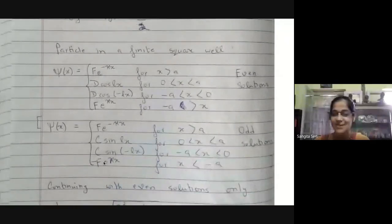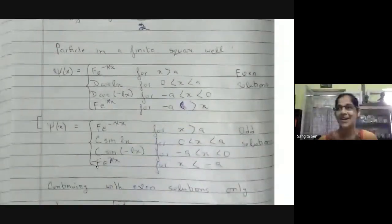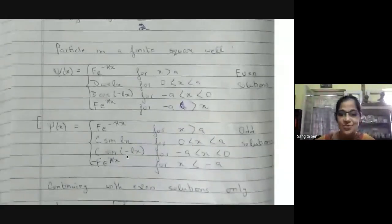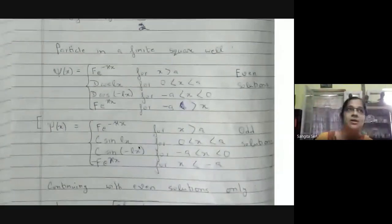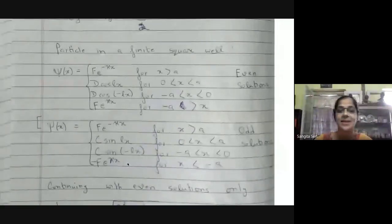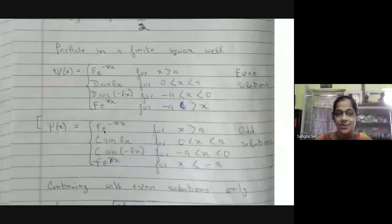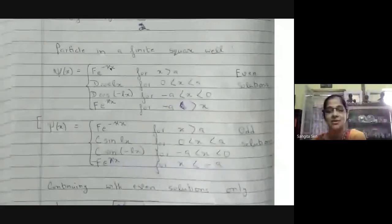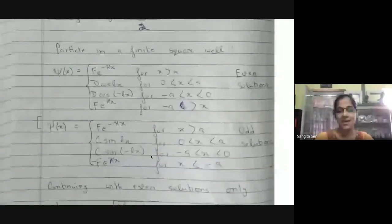The odd solutions will have a negative sign. When x is less than zero, for the negative segment of x, the wave function should simply be minus psi of minus x. That means you should have a minus sign here. The k values suitably take a different value so that part is taken care of. You were right, this will have a minus sign.